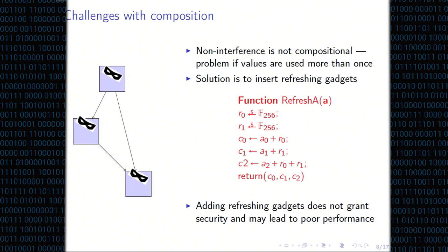For example, an additive refresh on three shares: you sample two values, add one sampled value to the first share, another sampled value to the second share, and fix the third share so you get the required result. I'm working in characteristic two, so addition and subtraction are the same. There are issues with this strategy: adding refreshing gadgets does not guarantee security, and every refreshing gadget adds cost because random sampling is expensive.